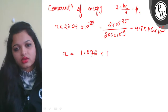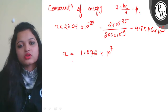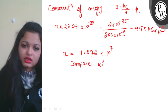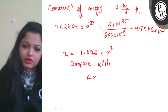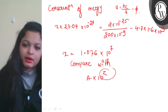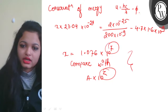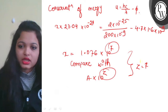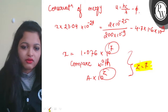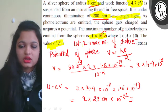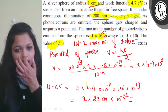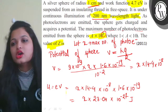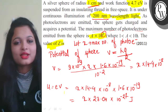The value of x comes out to be 1.076 × 10^7. Now comparing this with a × 10^z, the value of z is 7. The answer is an integer type question, so z equals 7 is the final answer for this question. I hope you understood well, all the best.